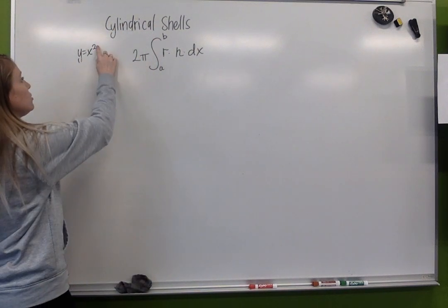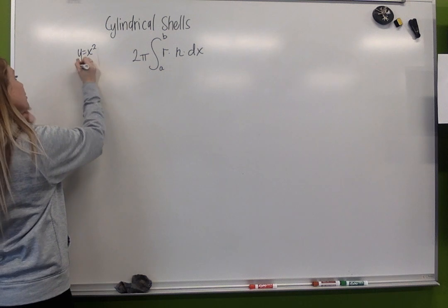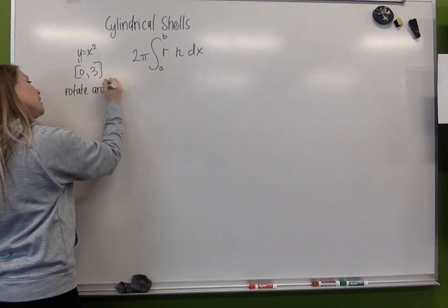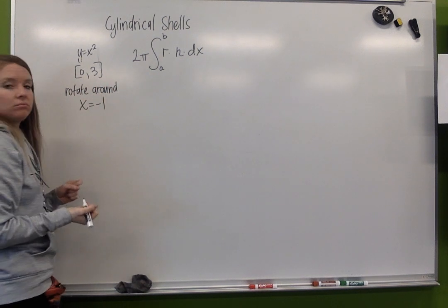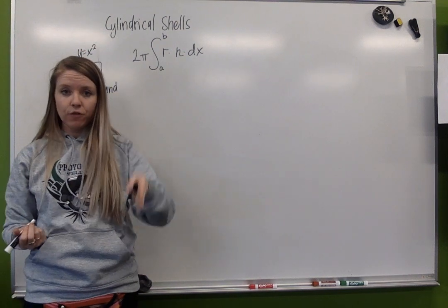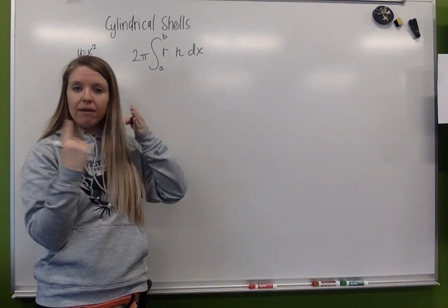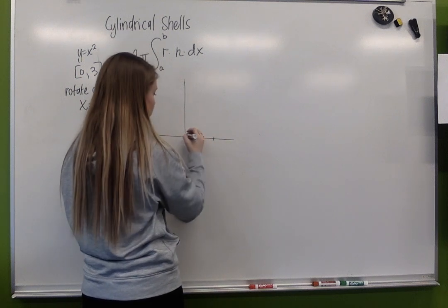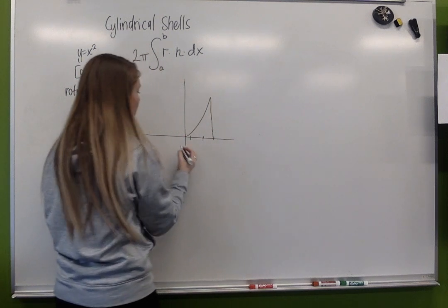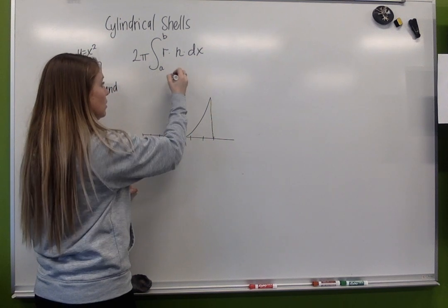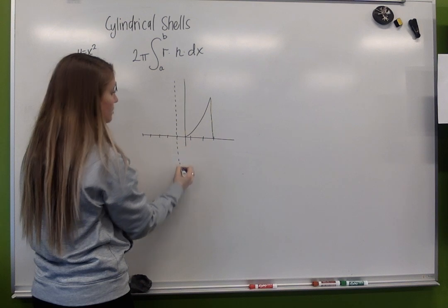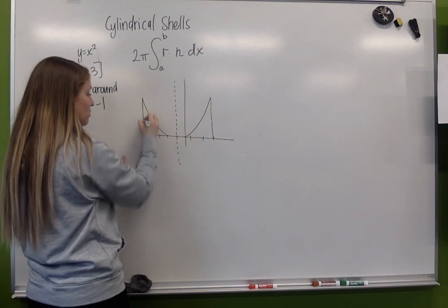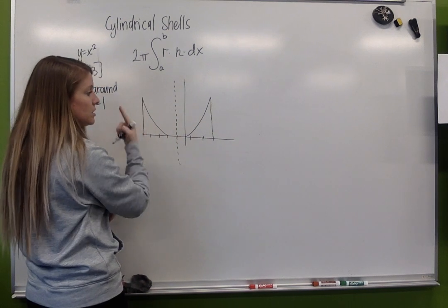We're still going to be using x squared, but now we'll still use 0 to 3. We're going to rotate around x equaling negative 1. X equals negative 1 is a vertical line, so we're rotating around that vertical line. Our graph is going to look like this. So we've got this guy, and we are going to rotate around this line. So what I'm going to do is I'm just going to mirror that over. We're going to see this. This is our rotation.